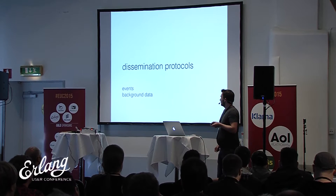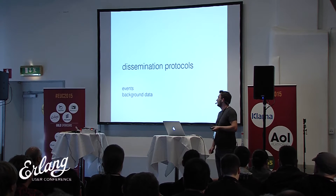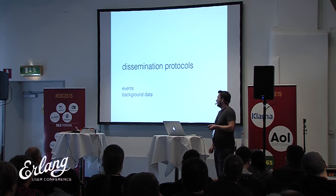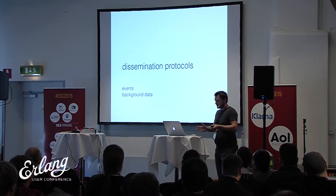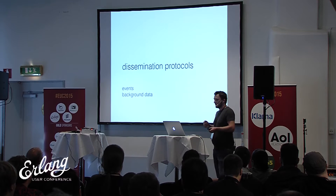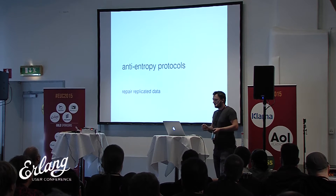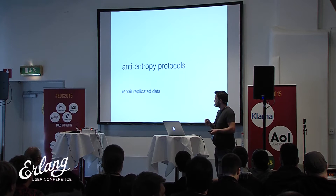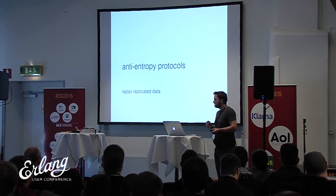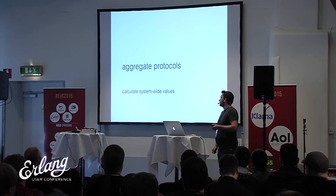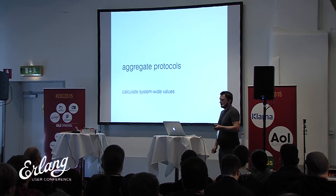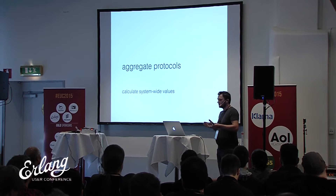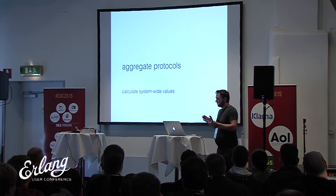Computer science distinguishes three major types of gossip protocols. There is a dissemination protocol, which basically spreads data across the nodes — those are events or background data. There are anti-entropy protocols, which are used for repairing replicated data; some databases use it for finding failures within the data sets and fixing them. And the third type is an aggregate protocol, which takes snapshots of the data on the nodes and then calculates the overall view of the system.